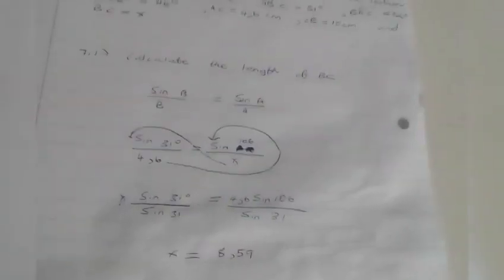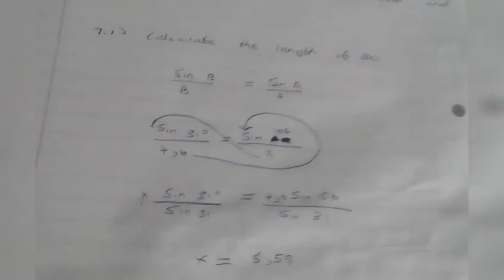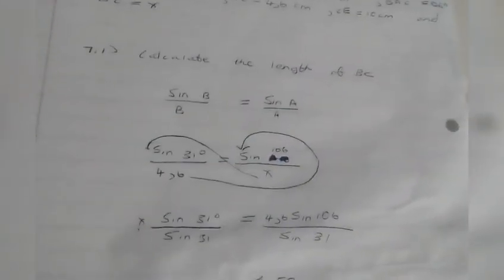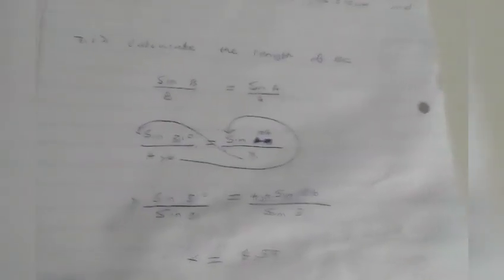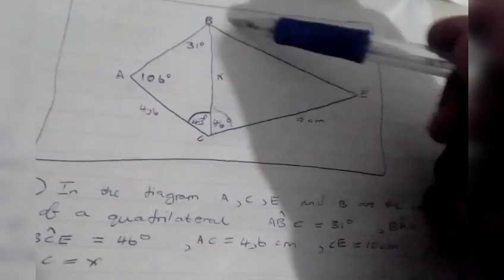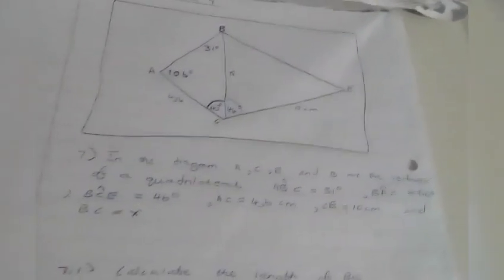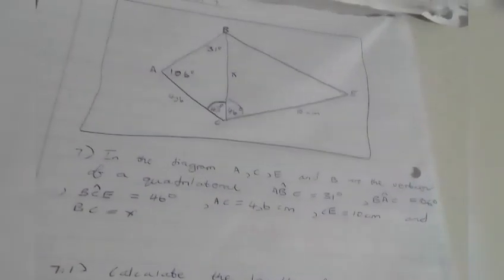In question 7.1, I want to make sure you guys understand how to do the area, sine, cosine rule, and trigonometry. It says calculate the length of DC. They want this angle, the side in centimeters.